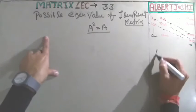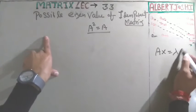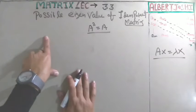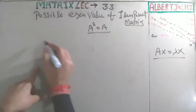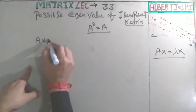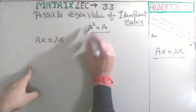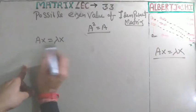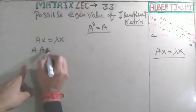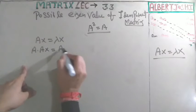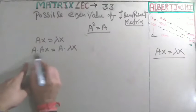This is the basic property: Ax equals λx to find the eigenvalues. So I am using this formula here, Ax equals λx. I have to get it, so I will multiply both sides by A. Then A times Ax equals A times λx.